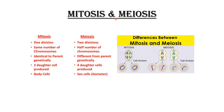Briefly reviewing mitosis and meiosis: in mitosis there is one division, while in meiosis there are two divisions. In mitosis the same number of chromosomes is maintained; in meiosis the number is halved. In mitosis the daughter cells are genetically identical to the parent; in meiosis they are genetically different. Mitosis produces two daughter cells and meiosis produces four daughter cells.